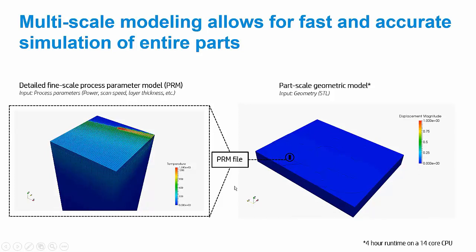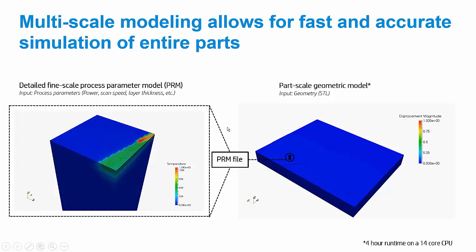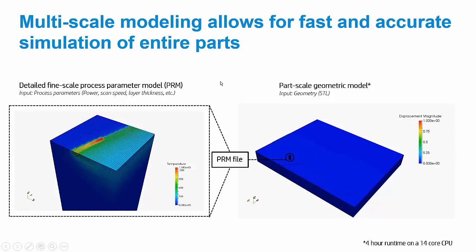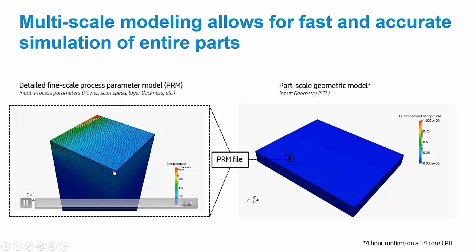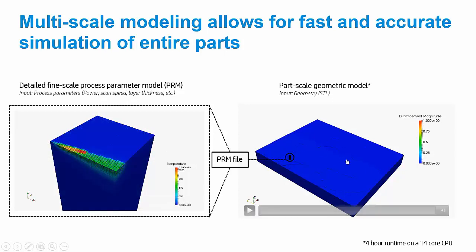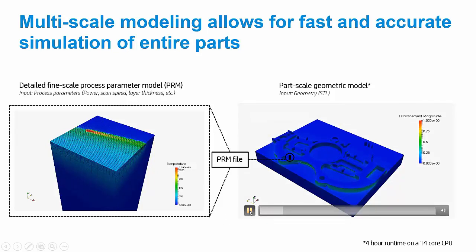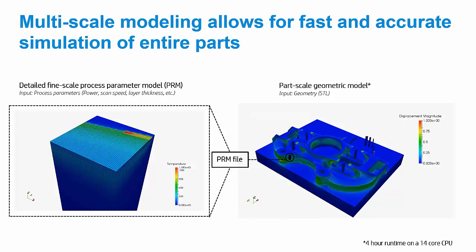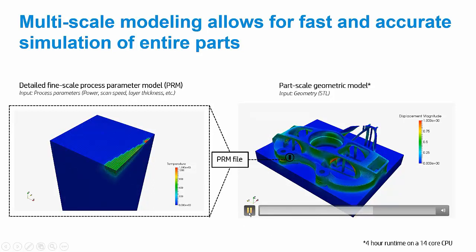Once we have that PRM file, we can take this information and start stitching blocks of material together. Since we also understand how the layers will mechanically interact with one another, we can pile those layers up and map them onto a geometry. While the small scale was a millimeter by a millimeter, this large scale is 240 millimeters along one dimension — nearly the entire build volume. We can now map the thermal and mechanical response onto a full geometry and actually see it building in situ. This example ran in four hours on my 14-core Autodesk-issued desktop, so runtimes are very fast.